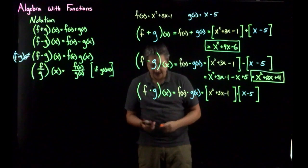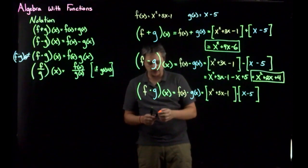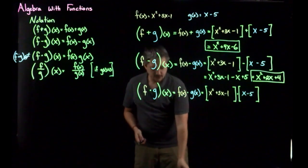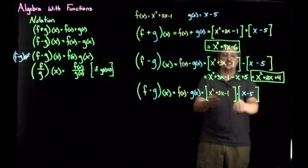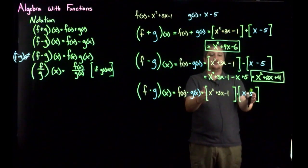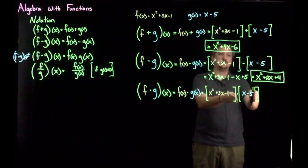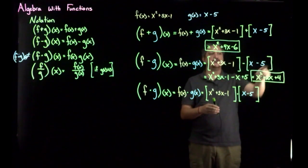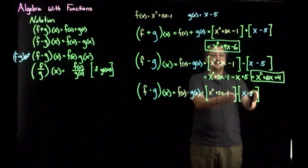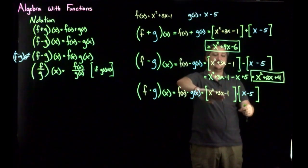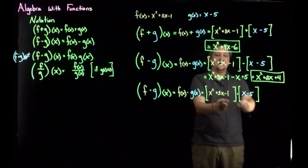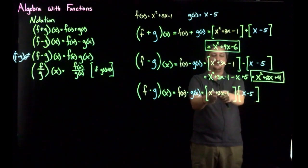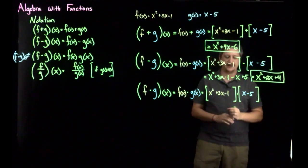Things get more interesting here because I have to distribute everything. A common mistake is writing only the second factor in parentheses — then you'd only distribute the negative 1 term instead of all of the first polynomial, which would be wrong.